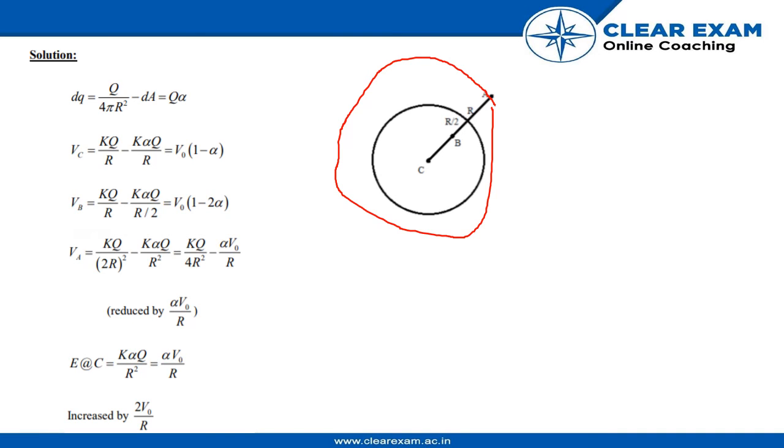Now after that, we would find the value of E at C, which would be Kα*Q upon R².